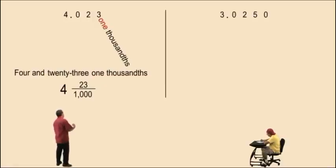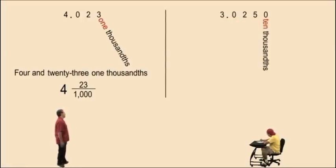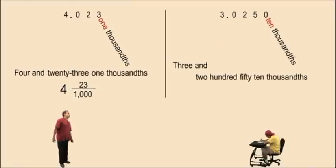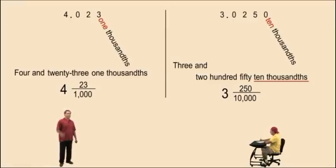Okay, let's bring it home. Here we have another mixed number. We have ones, tenths, hundredths, one thousandths, ten thousandths. The zero is in the ten-thousandths place. So notice here: three and two hundred fifty ten-thousandths. To write it in mixed number notation, it's three and two hundred fifty over ten thousand, which is read three and two hundred fifty ten-thousandths. There you go. And that's it for today. We'll see you again soon.